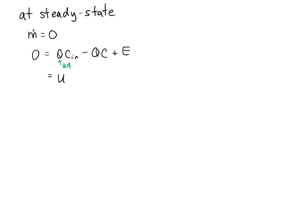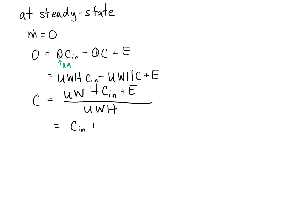So we can rewrite Q as U times the cross-sectional area, which is W times H, and then we still have C_in, minus Q, which again is U times W times H times C, plus E. And now I can rearrange this and solve for C, the steady state concentration in the box, which is equal to U times W times H times C_in, plus the emission rate, all divided by U times W times H. This is really C_in plus E over UWH.